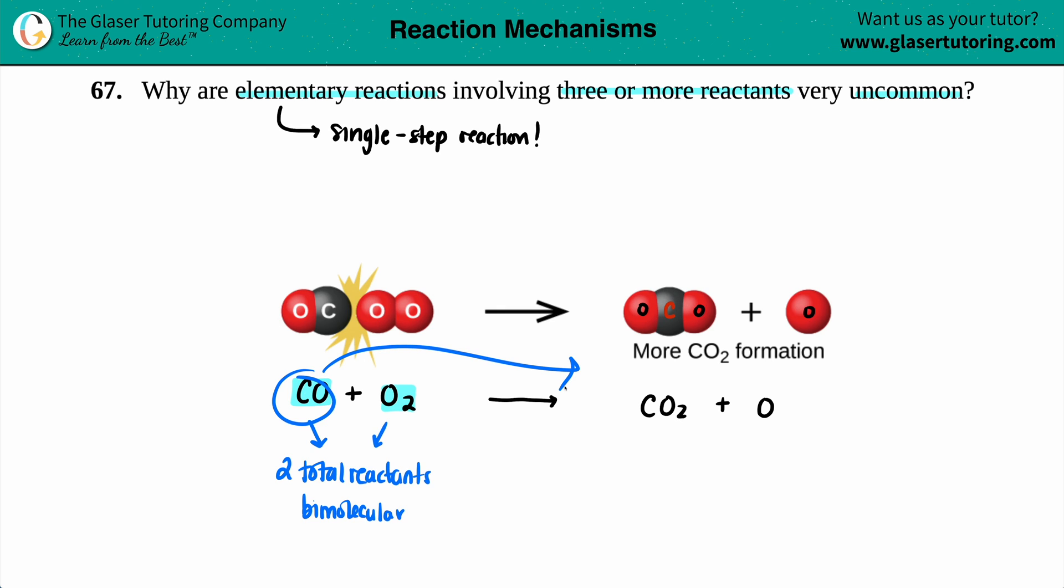If you have only one reactant breaking apart into two different products, that would be a unimolecular reaction because you only got one reactant. But in this case, the one that I pulled up is a bimolecular reactant.